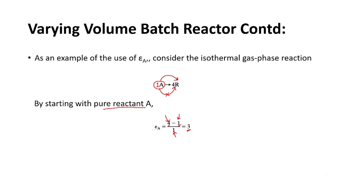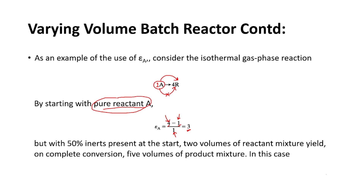This calculation applies only when we have pure reactant A — a single species in the feed with no contamination or mixture. But what if we have an inert gas present in the feed? Suppose 50% of the reactant feed is the desired species and the other half is an inert species. Then two volumes of reactant would yield five volumes of product.